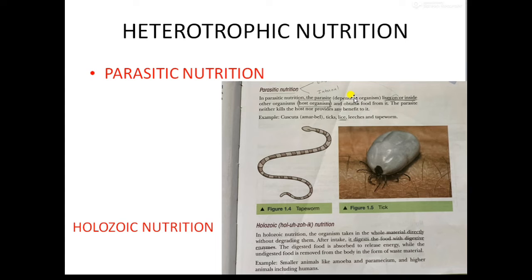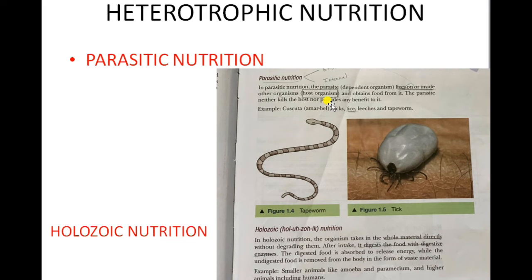Parasites are very small compared to the host. They live on or inside the host and get nutrition. They don't kill the organism but they harm the host. Examples: lice, ticks, leeches, and tapeworm. Cuscuta is the only plant which is a parasite — it lacks chlorophyll, so it is not an autotroph; it is a parasitic plant.